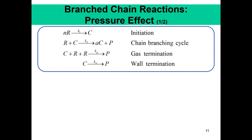NR is a generalized hydrocarbon. The first thing that happens is the initiation reaction. CH3CH2CH3 or ethane, represented by NR, goes to form the first intermediate C. C is nothing but a chain carrier or an active radical. The first step is the production of this chain carrier.